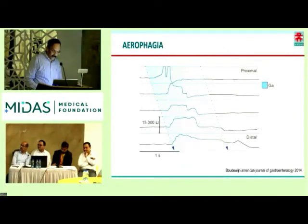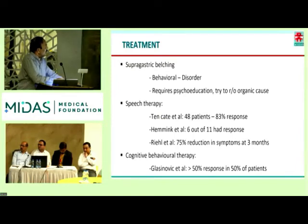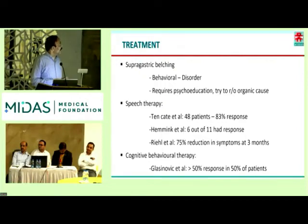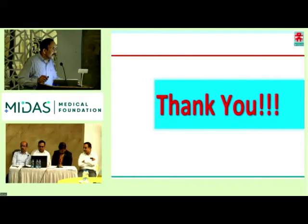For treatment of aerophagia and supragastric belching: since it's a behavior disorder, it requires psychoeducation. The patient wants organic disease to be ruled out first. Speech therapy has been associated with significant relief. You should sit with the patient, tell them the mechanism — it's a sort of reassurance and psychotherapy, explaining the mechanism. Speech therapy and cognitive therapy are the most important. There is hardly any role for drug therapy in these disorders.